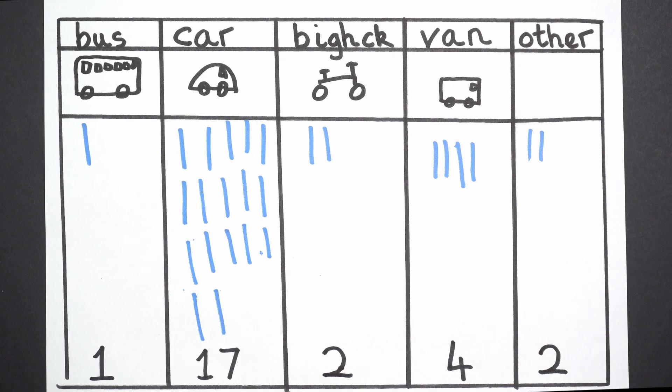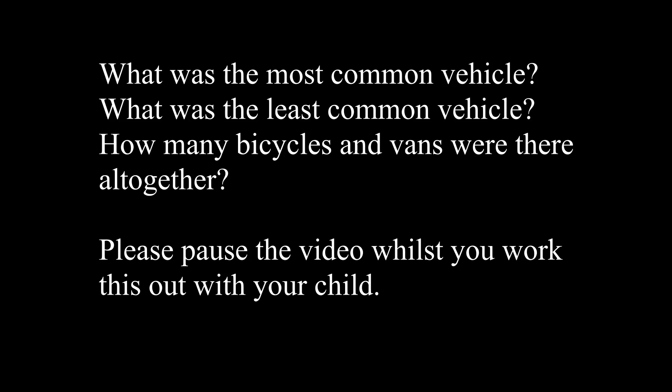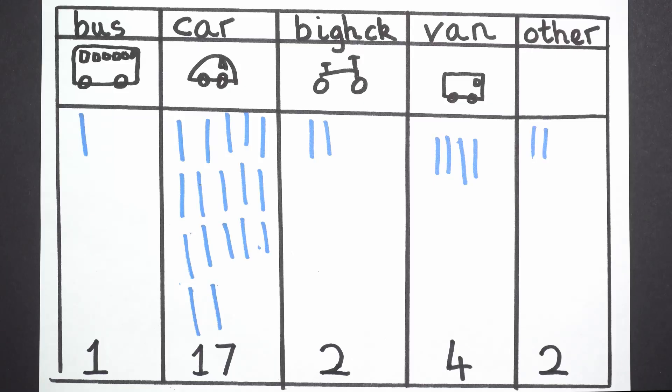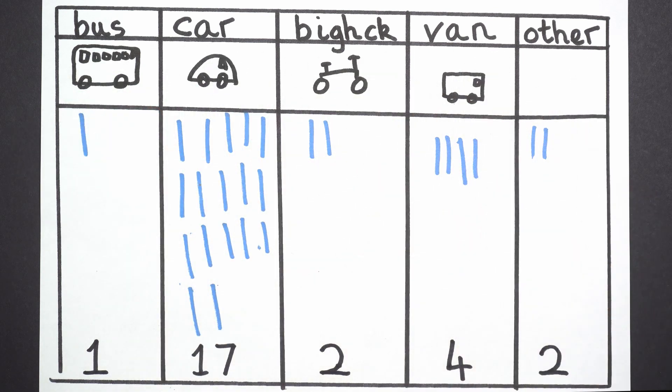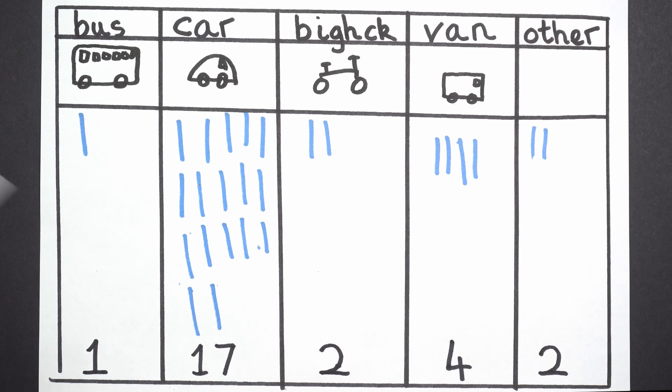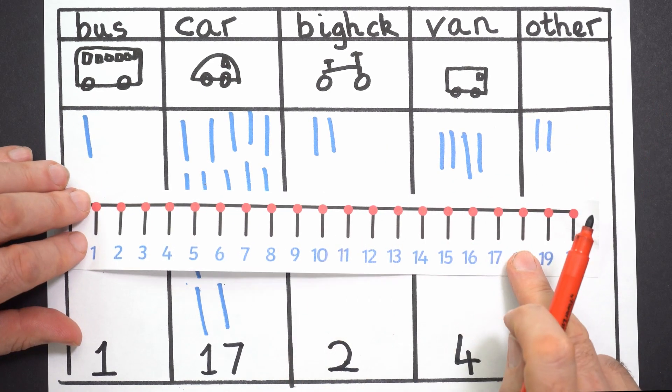Now I'm going to put some questions down in writing right now and I want you to try and work out the answers to them with your grown-ups. So I'm going to put them down now and you can pause the video. So, which was the most common vehicle? Which vehicle did we see most of? Which was the biggest number of vehicles? Was it bus, car, bike, van, or other? The answer was car because we had the most number of lines showing how many cars went past and the biggest number is 17. That's the number that's furthest along our number line.